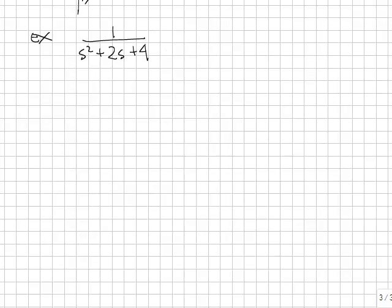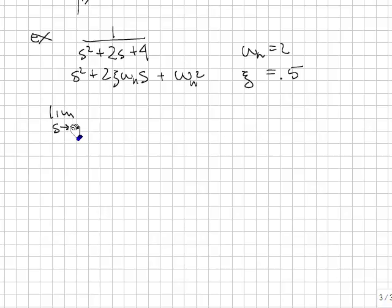Let's look at some examples. Given the plant, 1 over s squared plus 2s plus 4, let's draw an approximation to the step response. First, what's the damping ratio for the system? Well, if we put this in standard form, this is s squared plus 2*zeta*omega_n*s plus omega_n squared. And you can see right away omega_n is equal to 2, zeta is equal to 0.5. We also should check the final value. So the limit as s goes to 0 of 1/s times s, that takes care of the step, and the s in the final value theorem of 1 over s squared plus 2s plus 4 is equal to 1 fourth.